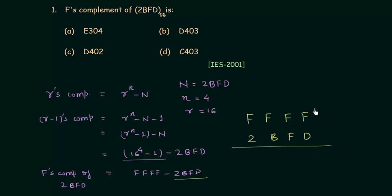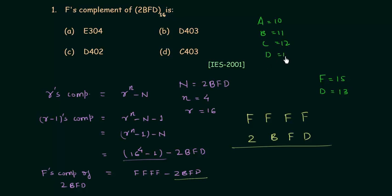Now, f is equal to 15 and d is equal to 13, because a equals 10, b equals 11, c equals 12, d equals 13, e equals 14, and f equals 15. These are the representations of 10 to 15 in the hexadecimal number system.